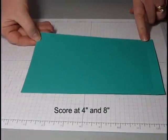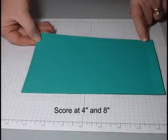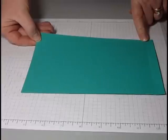Once we've got our score lines in place, we want to go ahead and cut some lines into this cardstock so that we'll pull out our hidden message from behind it.